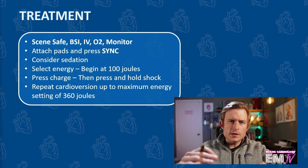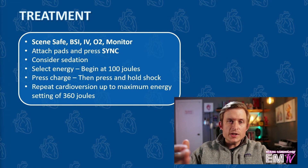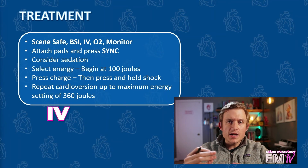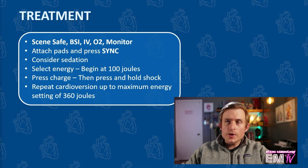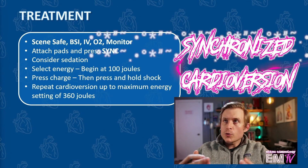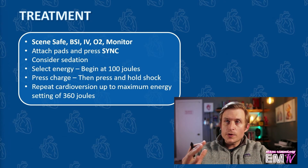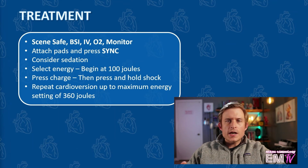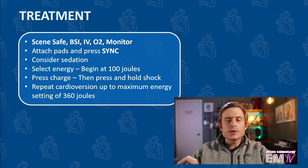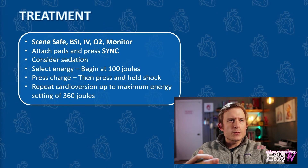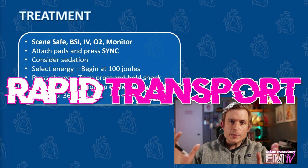Now let's go ahead and take a look at the treatment. Just like with all my other Static Cardiology cards, I'll begin treatment by regurgitating the mantra: scene safe, BSI, IV, O2, monitor. Because this is an unstable rhythm and it's tachycardic, I'm actually going to perform a synchronized cardioversion. I'll attach the pads to the patient's chest and press the sync button. Because she is alert, I'll consider providing some sedation prior to the procedure. I'll then select energy beginning at 100 joules, press charge, and when ready, press and hold the shock button to deliver the energy. I'll repeat the synchronized cardioversion up to a maximum energy setting of 360 joules. Other than that, rapid transport.